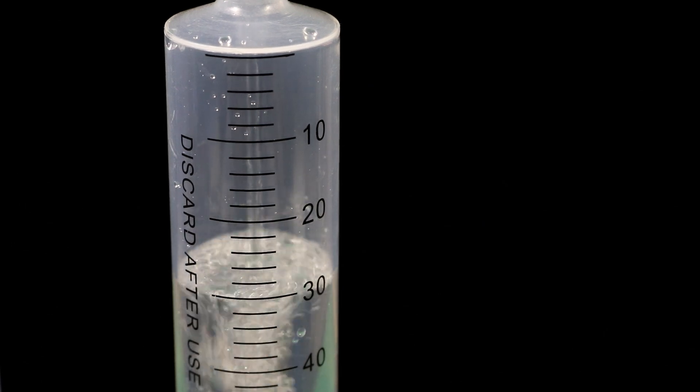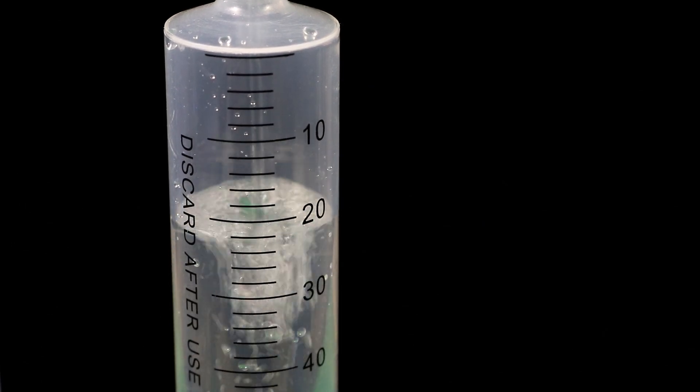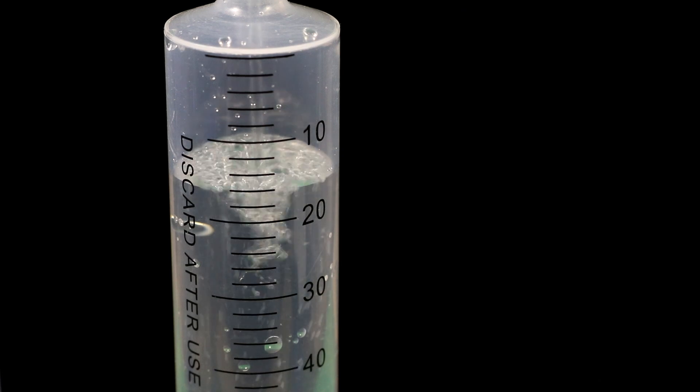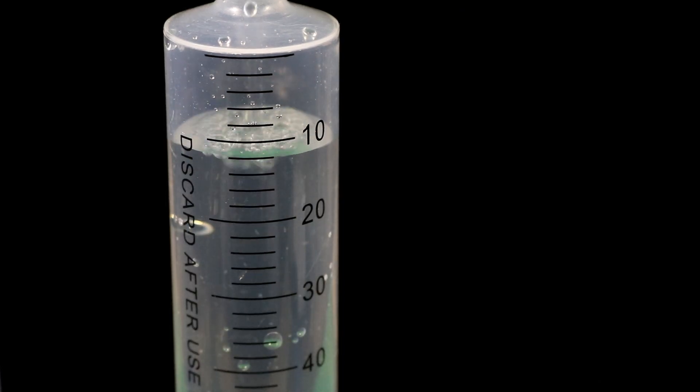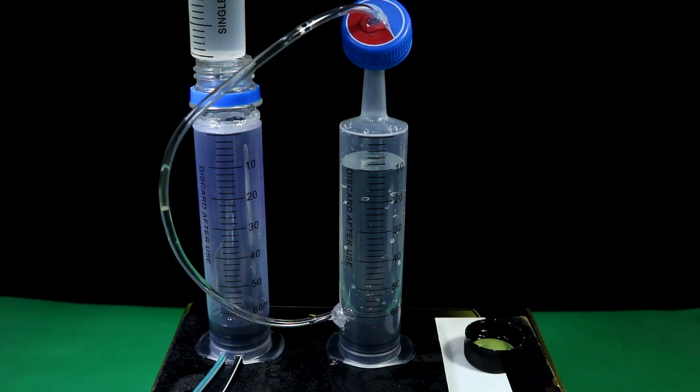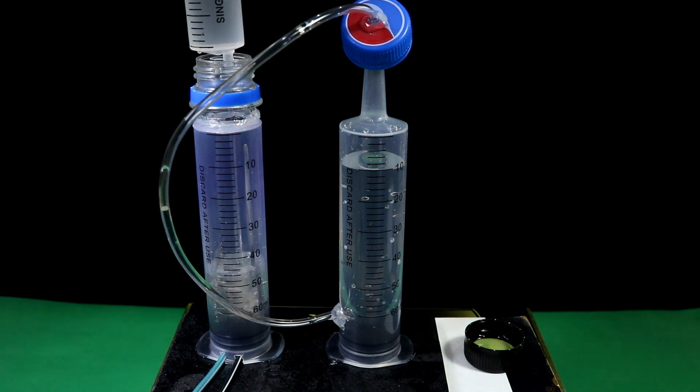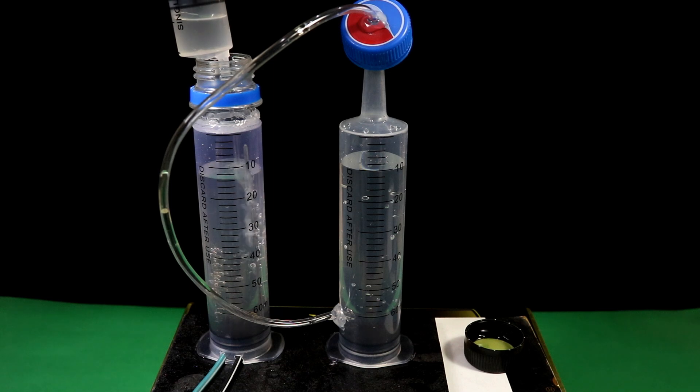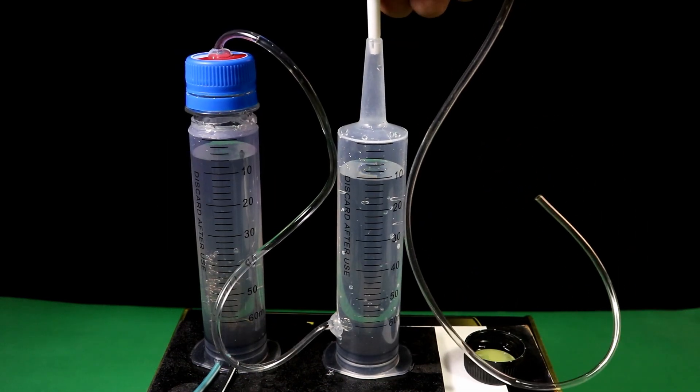Fill up the second syringe using distilled water. This will work as a filter and provide some isolation. Also fill up the first syringe using the electrolyte we made previously. Close the lid and connect the gas outlet pipe to the second syringe.